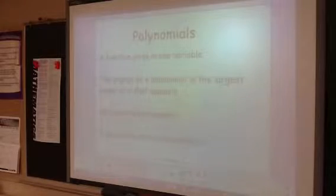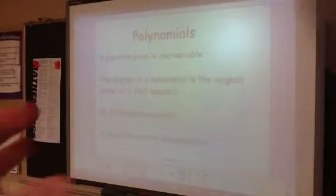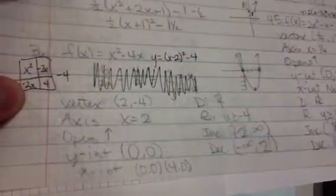For 36, there is my vertex form. I got a vertex at (2, −4), an axis of symmetry at x = 2. It opens up, a y-intercept of (0, 0), an x-intercept of (0, 0) and (4, 0). A domain of negative infinity to infinity, a range of [−4, infinity), increasing from 2 to infinity and decreasing from negative infinity to 2.